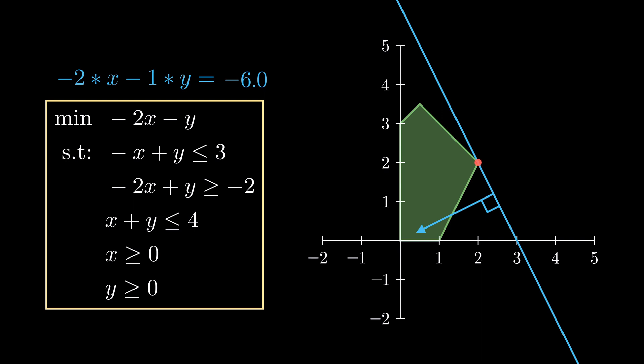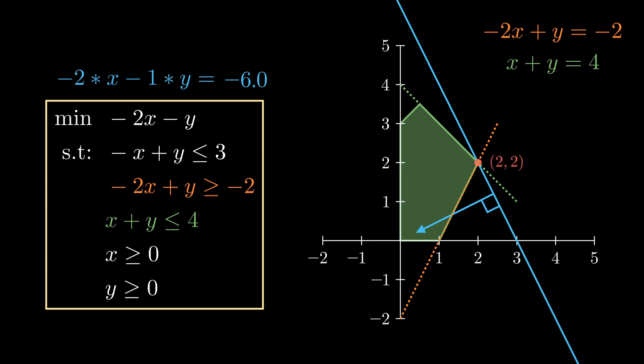But what are the x and y values? Notice that this optimal point, indicated as the red dot, occurs where the orange and green constraints are satisfied at equality. So to find the optimal point, we just need to solve for x and y in these equations. The optimal point turns out to be x equals 2, y equals 2. Note that there is only one optimal solution in this case, and it occurs at a vertex, or corner point, of the feasible region.